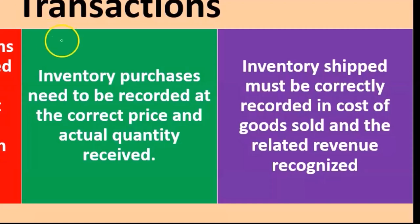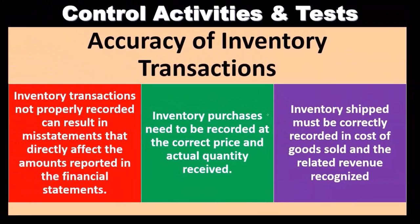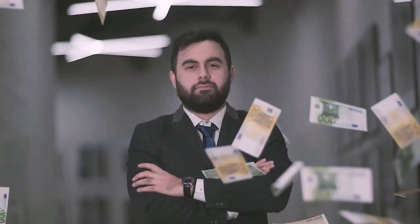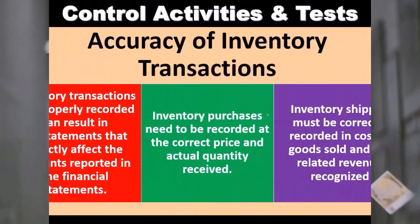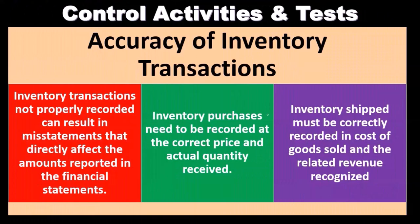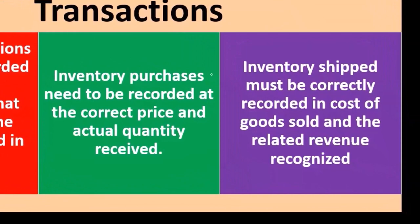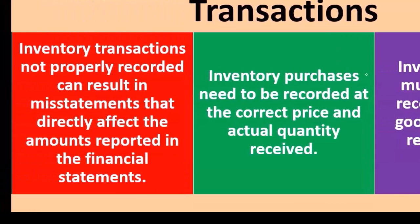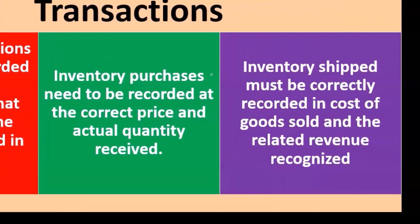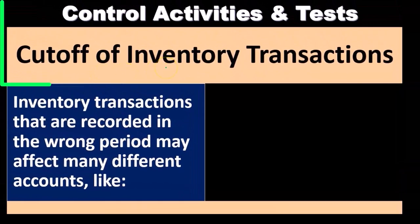Inventory shipped must be correctly recorded in cost of goods sold and the related revenue recognized. When we ship inventory — because we sold it — there are two components: the revenue component where revenue goes up and accounts receivable or cash goes up, and the inventory side where inventory goes down. Revenue should be recognized at the point in time when the work is completed, and cost of goods sold is recognized when we use the expense to help generate revenue — the matching principle. Both should happen at the point we ship the inventory.